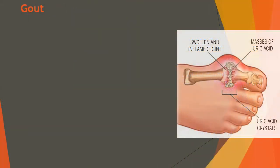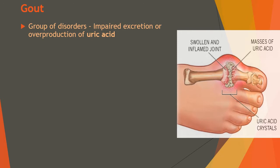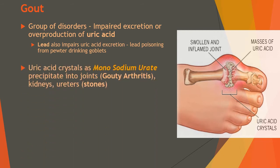Of all the defects associated with nucleic acid metabolism, gout is the most common disease. It is actually a group of disorders resulting from impaired excretion or overproduction of the end product of purine metabolism — uric acid. When uric acid goes beyond the serum level in the human body, it deposits as crystals of monosodium urate. These crystals precipitate in the joints, leading to gouty arthritis. As seen in the accompanying picture, the extremities — particularly the toes — are most commonly affected.